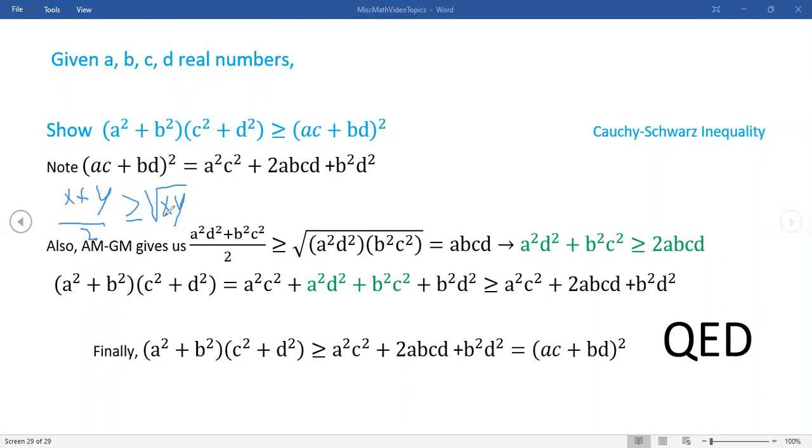I never knew it had this much power though. So now in this particular case, since abcd is very prominent right here, the AM-GM, if you let a²d² be your x and b²c² be your y, the rest of it is just substituting in.